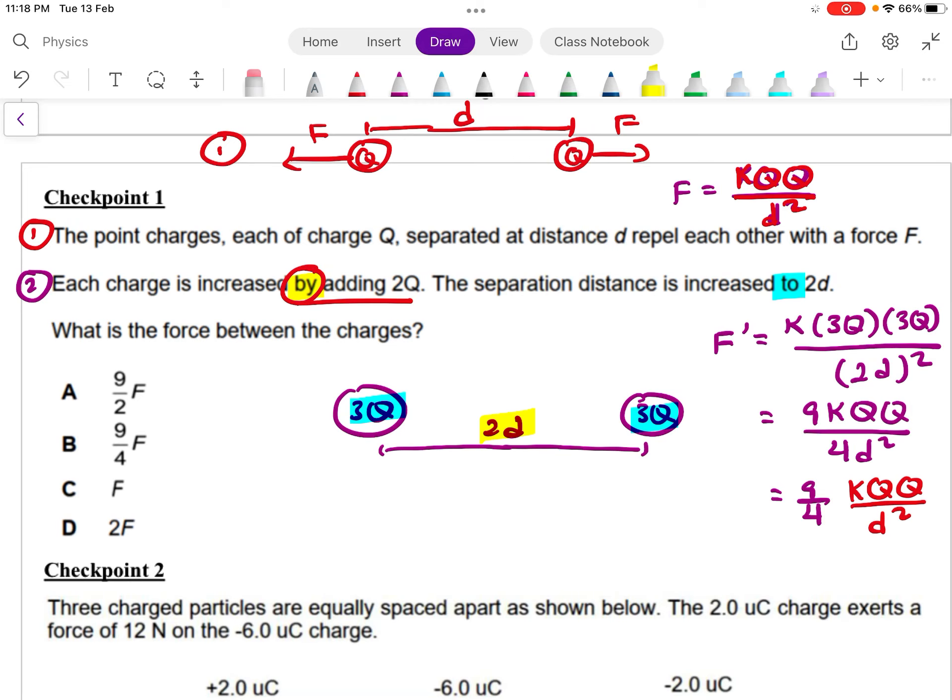So now you sub in the formula, right? So okay, the new force is K, 3Q multiplied by another 3Q, then divided by something R squared, right? So it's 2D bracket squared. So you do the manipulation, right? You realize that you'll get 9KQQ over 4D squared. Then you take out the 9 over 4.